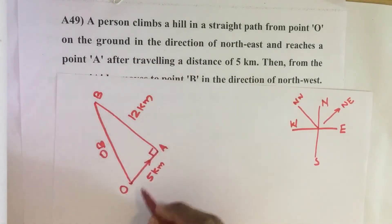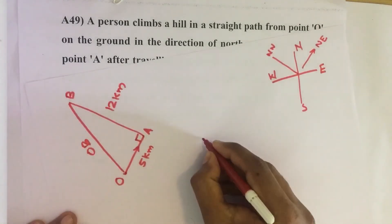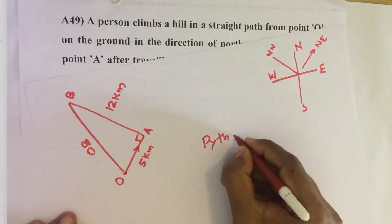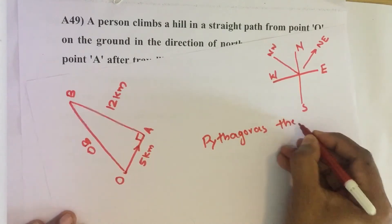Now it becomes a right angle triangle. So if you know two sides of a right angle triangle, we can find the third side by using Pythagoras theorem.